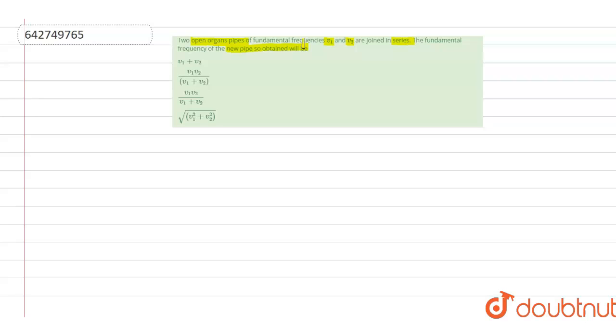Now to understand which is the correct answer, let's say originally you had two pipes of length L1 and L2.